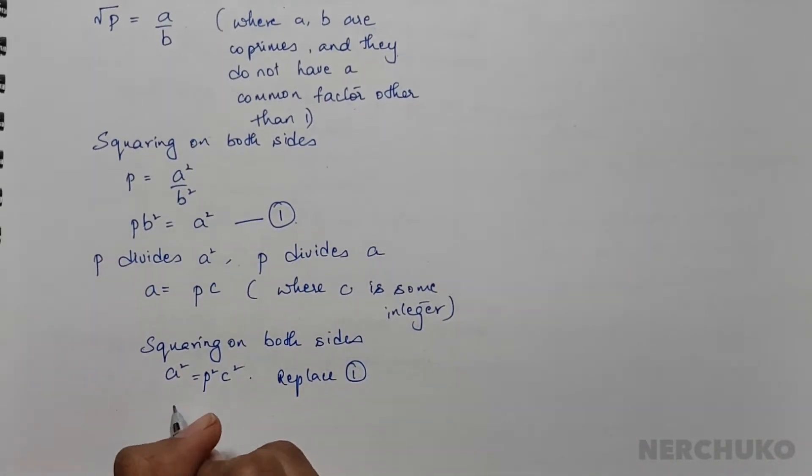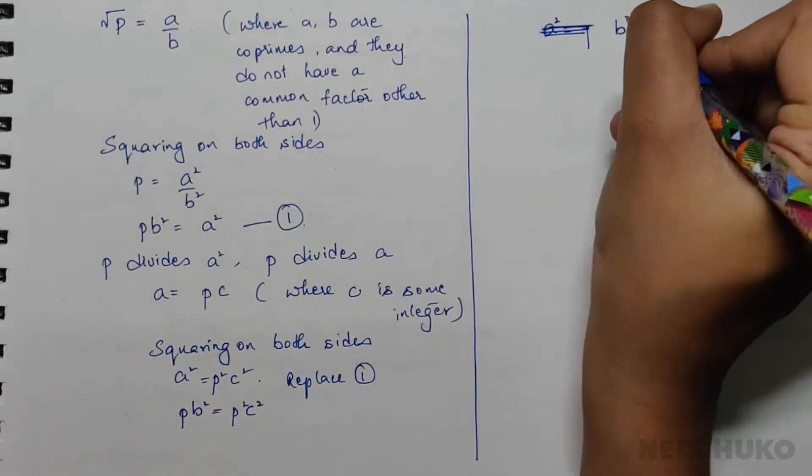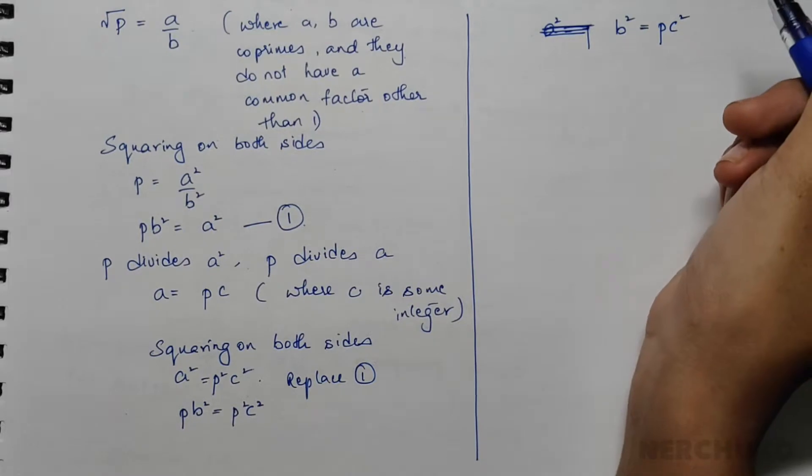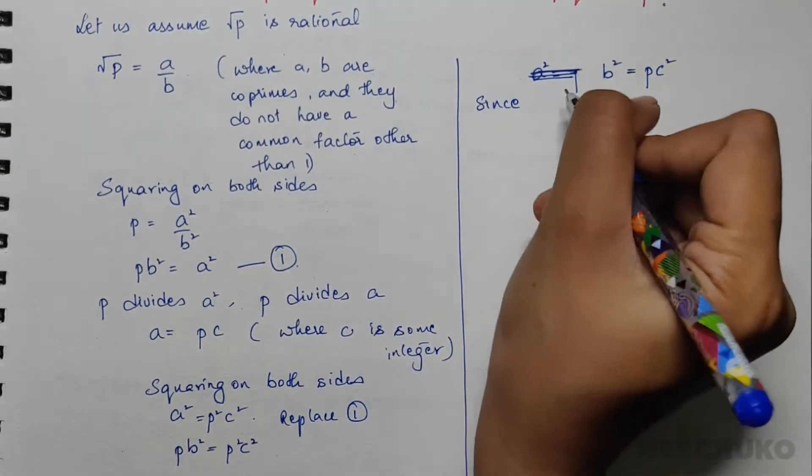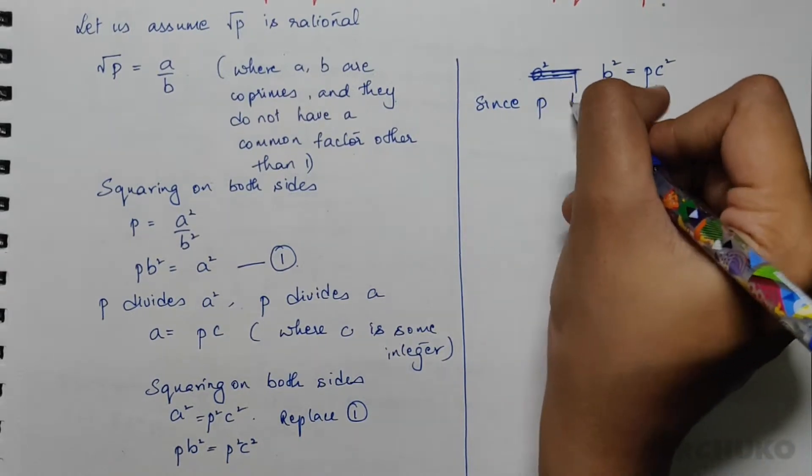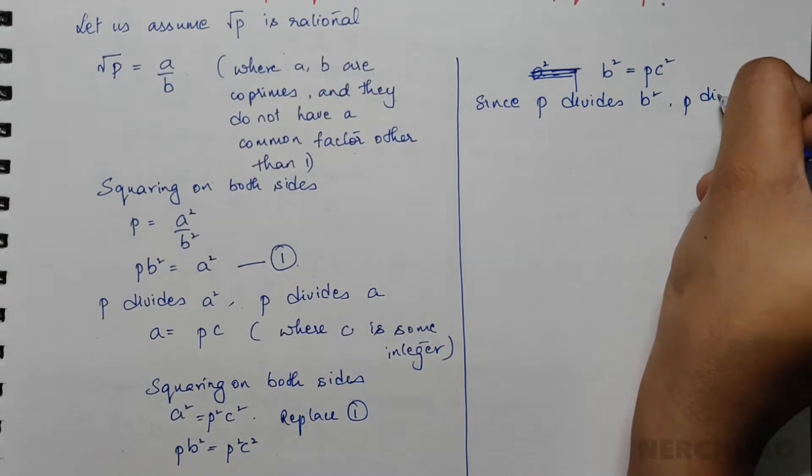I would have pb squared equal to p squared c squared, so I would have b squared equal to pc squared. Since p divides b squared, p divides b.